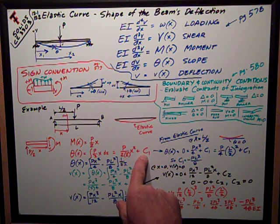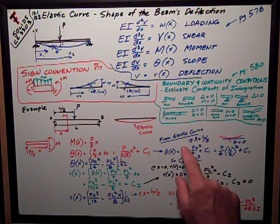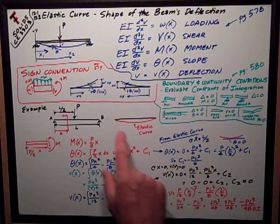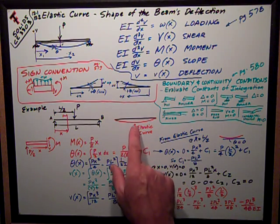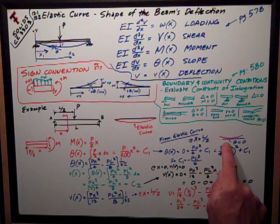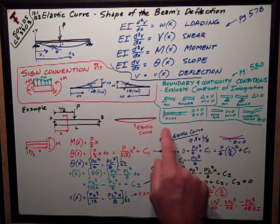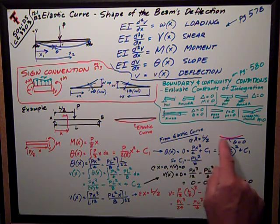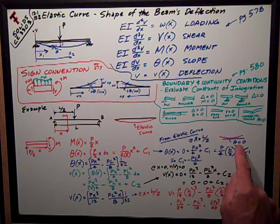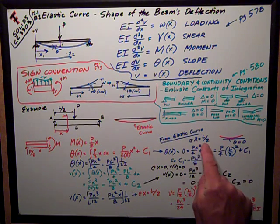Okay, I don't know what that constant is until I use a boundary condition. From my elastic curve, I can see that at X equals L over 2, which I've kind of drawn a little close-up over here, the slope by symmetry, the slope of the elastic curve has got to be equal to zero right there in the middle at L over 2.